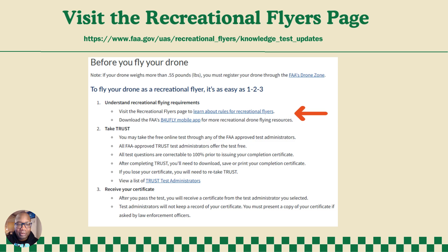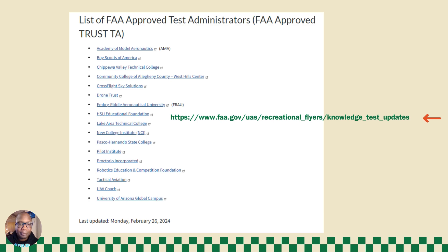Before you fly your drone, the link is above. If you click on that website, it'll take you directly to the information you need. Before you fly, there are three easy steps to follow, and I'm going to walk you through each one. Once you get to the website, you'll see there are approved test administrators. You can pick and choose. I use Embry-Riddle Aeronautical University, but all the links on that website will let you download and take the exam.